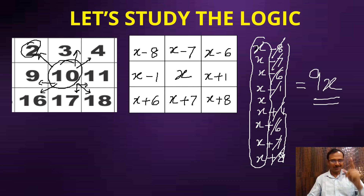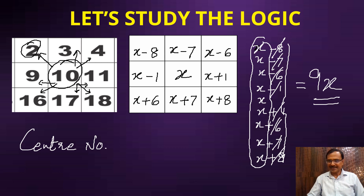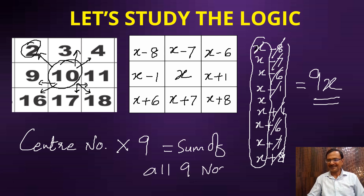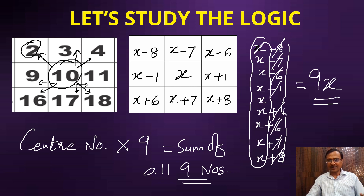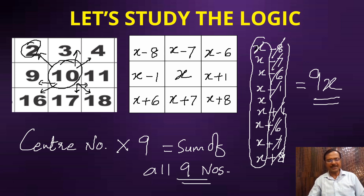Now the logic must be clear. The center number is X. If you multiply the center number by 9, you get the sum of all 9 numbers. So when your friend tells you the central number, just multiply that number by 9 in your mind and tell him the sum. You can practice this with 4 or 5 calendars — pick random blocks, see the middle one multiplied by 9. You'll get the sum of all 9 numbers. A very amazing and interesting short trick.